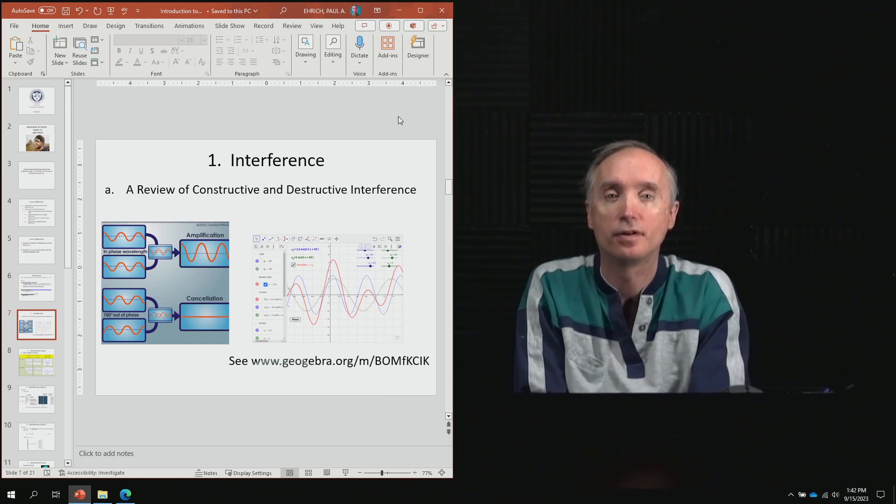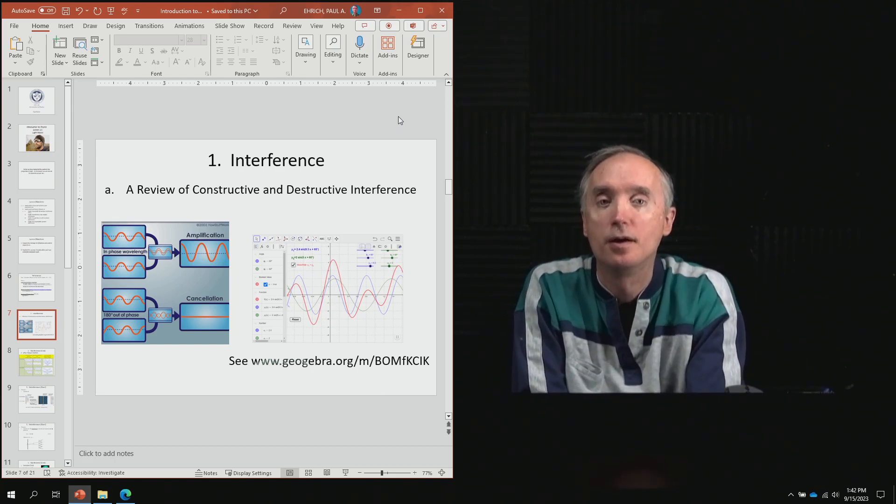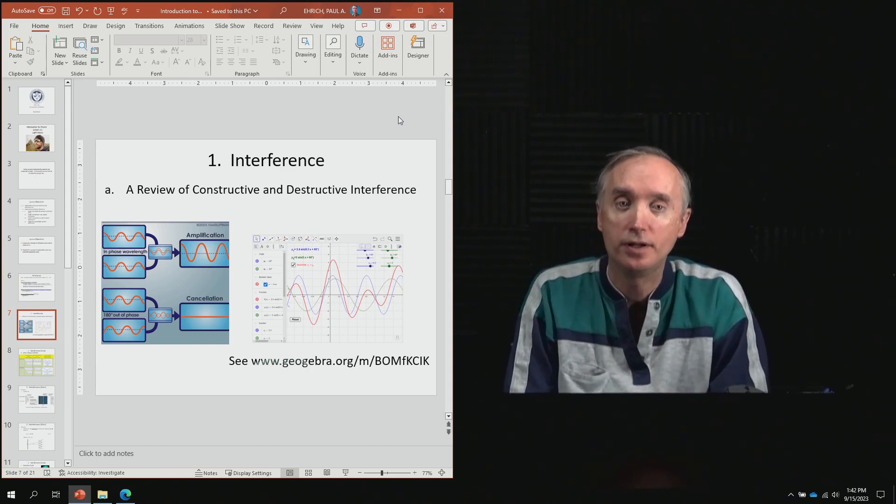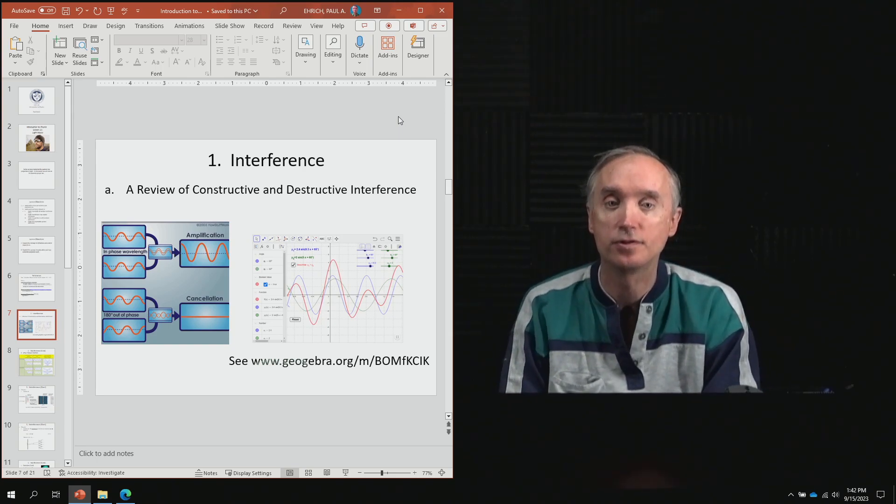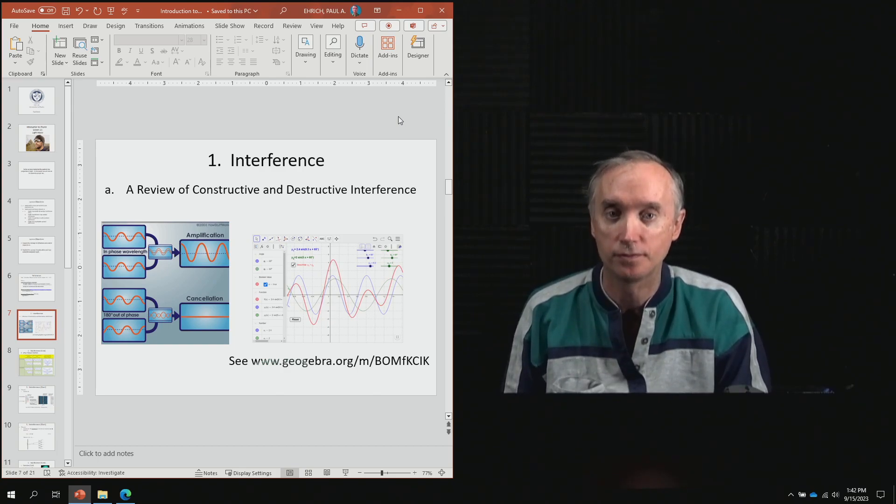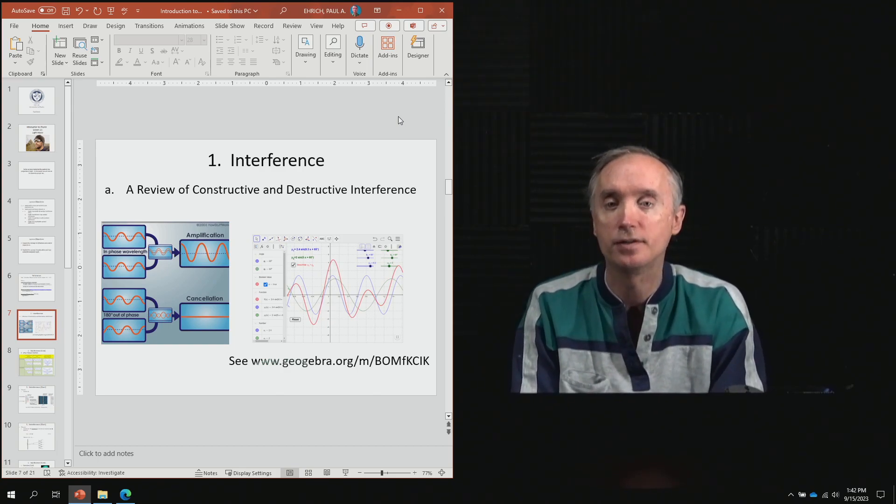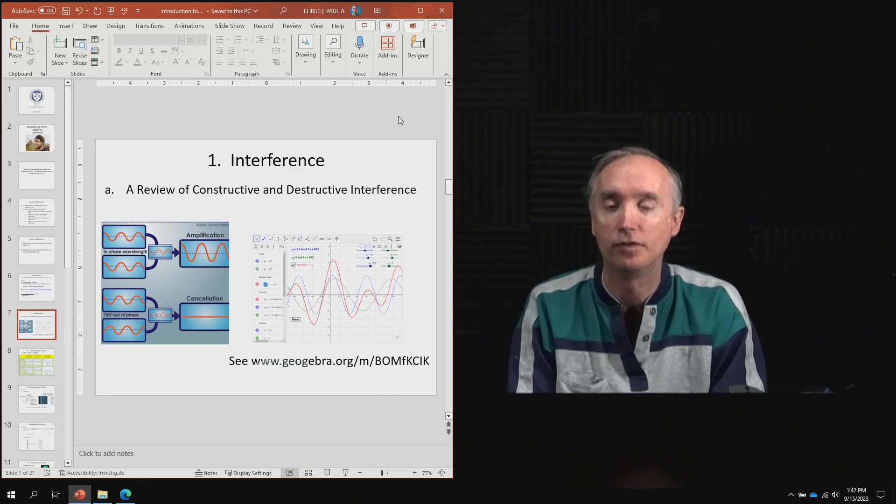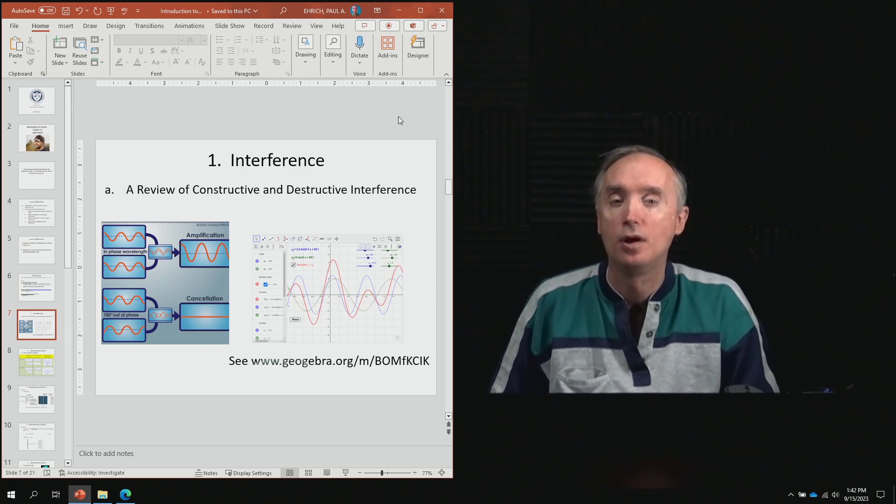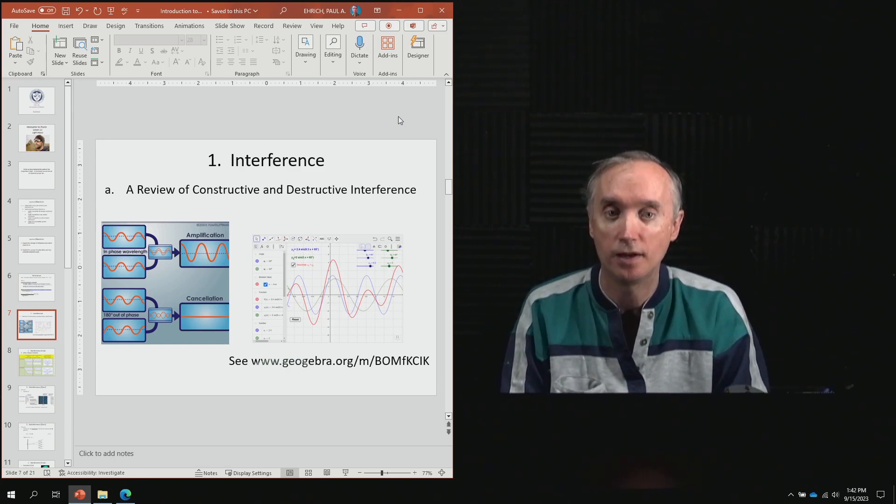All right, let's begin our discussion of wave properties by going back and reviewing what interference was. So we already did this in a previous lesson, but we want to talk more about what causes interference. And there are two kinds of interference that we're going to be very much interested in, constructive and destructive interference. And so this is going to happen when you add two waves together.